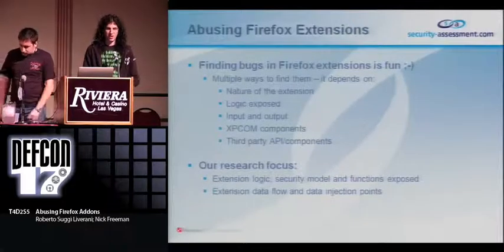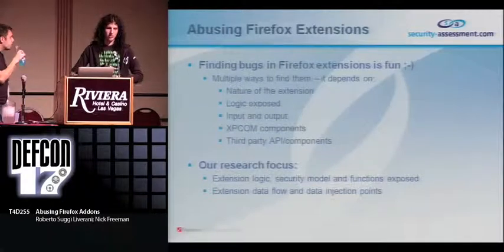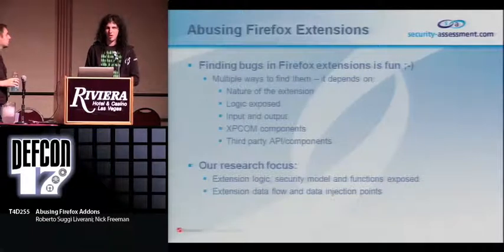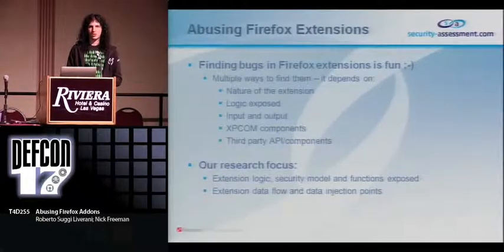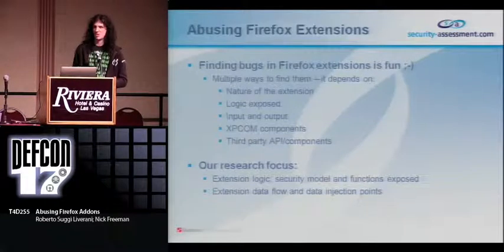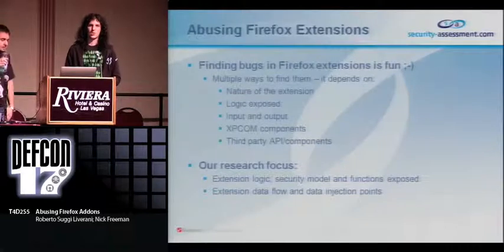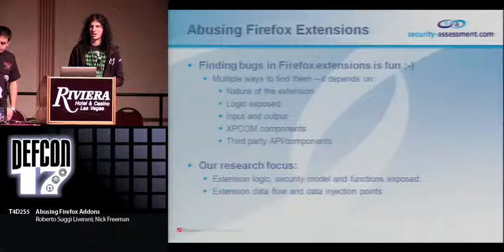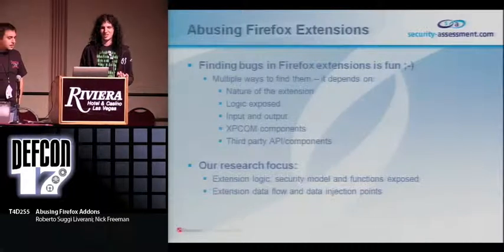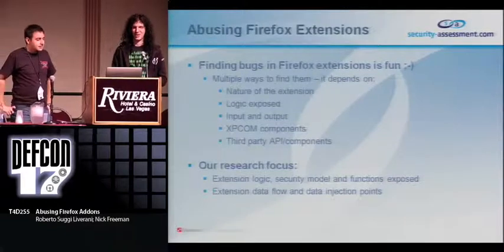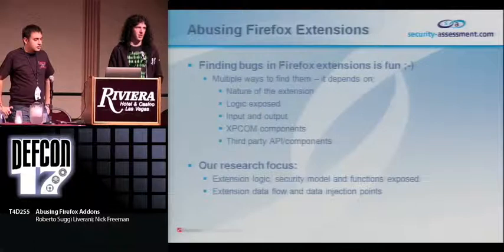There are many ways to find bugs in Firefox extensions. Our approach was to use all of the extension — click on everything, go to different websites that use its functionality, and figure out what makes it tick. Look at the logic, explore input and output vectors — what is being input into the extension, what websites can it read from. Look at any XPCOM components it might introduce, which could be coded in C++ and possibly vulnerable to memory corruption vulnerabilities. Also look out for any third-party components or APIs — we've seen SQL-injectable password fields and things going over HTTP.